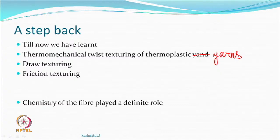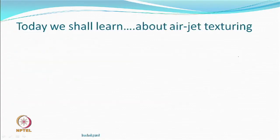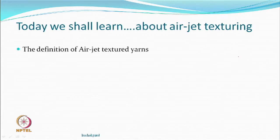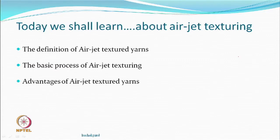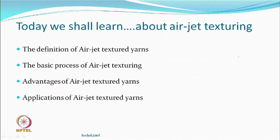Twist was the mode of deformation — could have been false twist or any other twist method. Today, we will learn something about air jet texturing: the definition, what type of product is called an air jet textured yarn, the basic processes involved, the advantages, and applications of such materials — yarns and fabrics made from them.